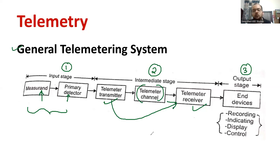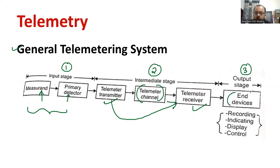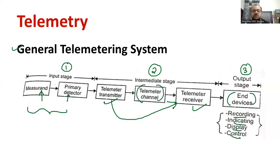The intermediate stage may cover over 200 meters, 1 kilometer, or even 1000 kilometers — it depends. You may be working in the city office while your measurement system is at a remote place. By using the input and intermediate stage, you will be receiving the information from these devices. Using the data, you can convert it into information by using electronic gadgets. You can record the data, perform indication, display it, and use it for control purposes. This is what is actually called a telemetry system.